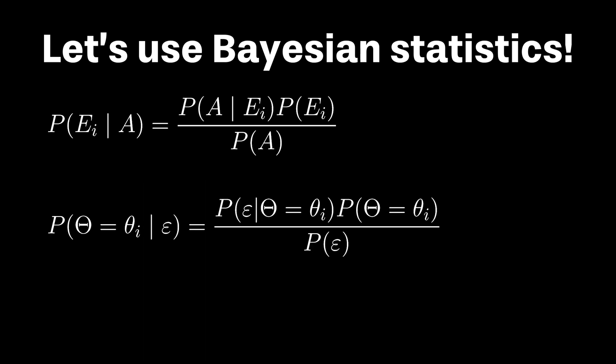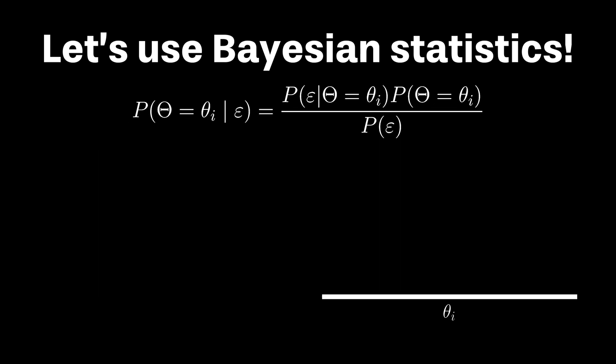We can then rewrite our equation using this new notation, where the chance of our model parameter theta equaling one possible value, theta sub i, given our data epsilon, is a function of three factors.